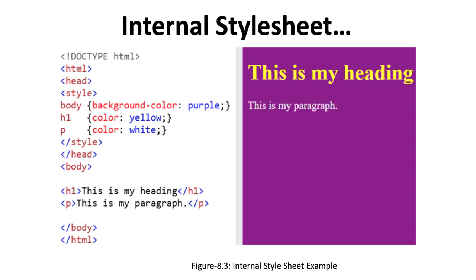Then H1 is color yellow, then paragraph is color white. The style tag is closed, head tag is closed, then in the body we have 'this is my heading' as the heading text and 'this is my paragraph' as the paragraph text, then the P tag, body tag, and HTML tag are all closed. So here background color is purple, heading color is yellow, paragraph color is white.